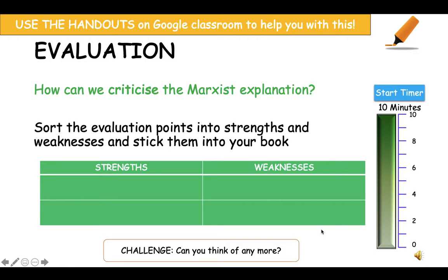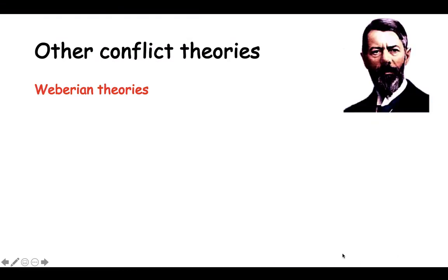Using the handouts on Google Classroom, I want you to evaluate the Marxist explanation — what are its strengths and what are its weaknesses? Sort the evaluation points into strengths and weaknesses and write them into your books. For the challenge, can you think of any additional strengths or weaknesses through your own research or thinking? Make sure you label that as your challenge.